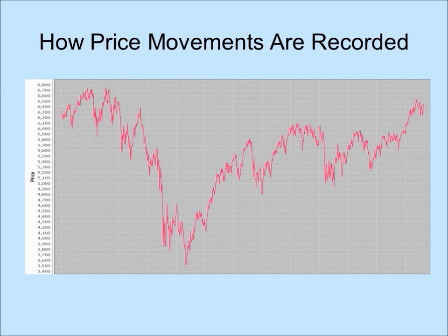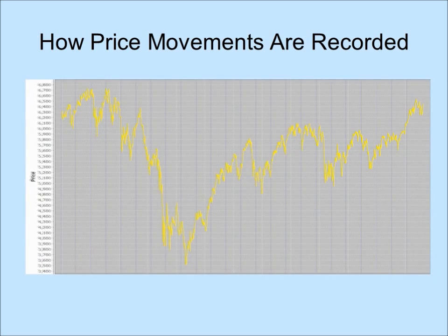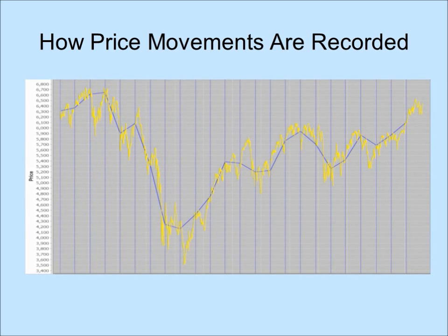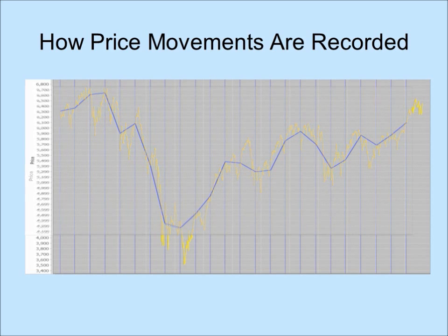Yet when we describe price movements in financial markets, we tend to use snapshots taken at fixed intervals. We decide how often we sample the data, then take snapshots at the frequency that we have chosen. These snapshots form an interval-based summary.